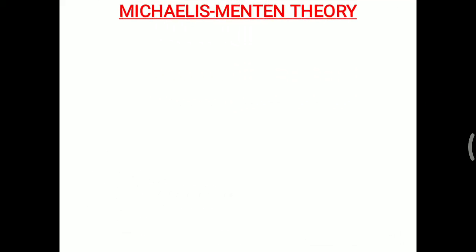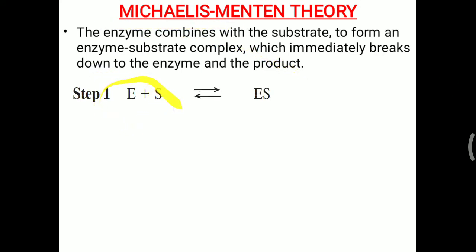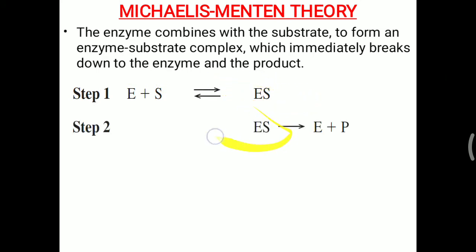The first is Michaelis-Menten theory, which is a very popular and widely accepted theory for enzyme-substrate complex. The enzyme combines with the substrate to form an enzyme-substrate complex, which breaks down to give the enzyme and the product. First, the enzyme combines with the substrate so an ES complex is generated.